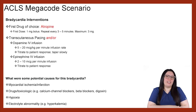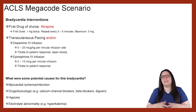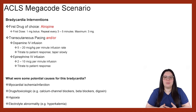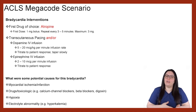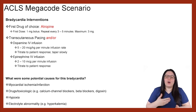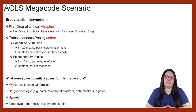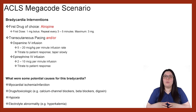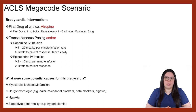What do our bradycardia interventions look like? Our first drug of choice is always going to be atropine. Based on the new 2020 AHA guidelines, our first dose is now going to be one milligram bolus. We're going to repeat every three to five minutes until we reach that maximum of three milligrams.